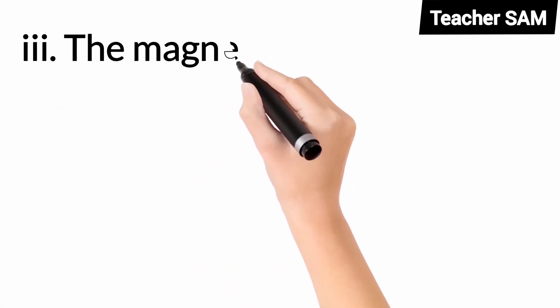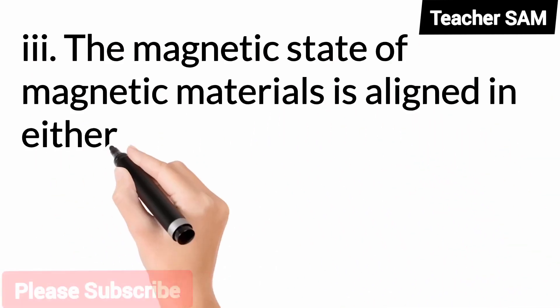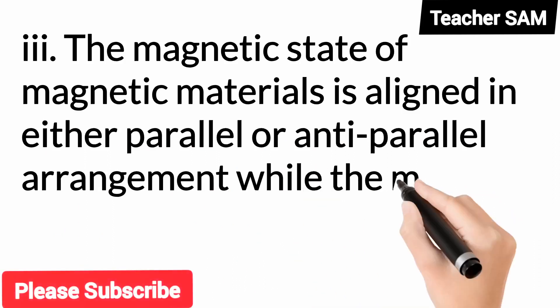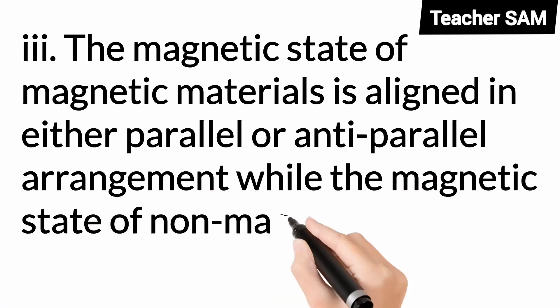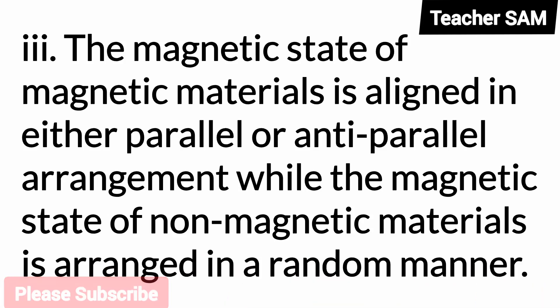3. The magnetic state of magnetic materials is aligned in either parallel or anti-parallel arrangement while the magnetic state of non-magnetic materials is arranged in a random manner.